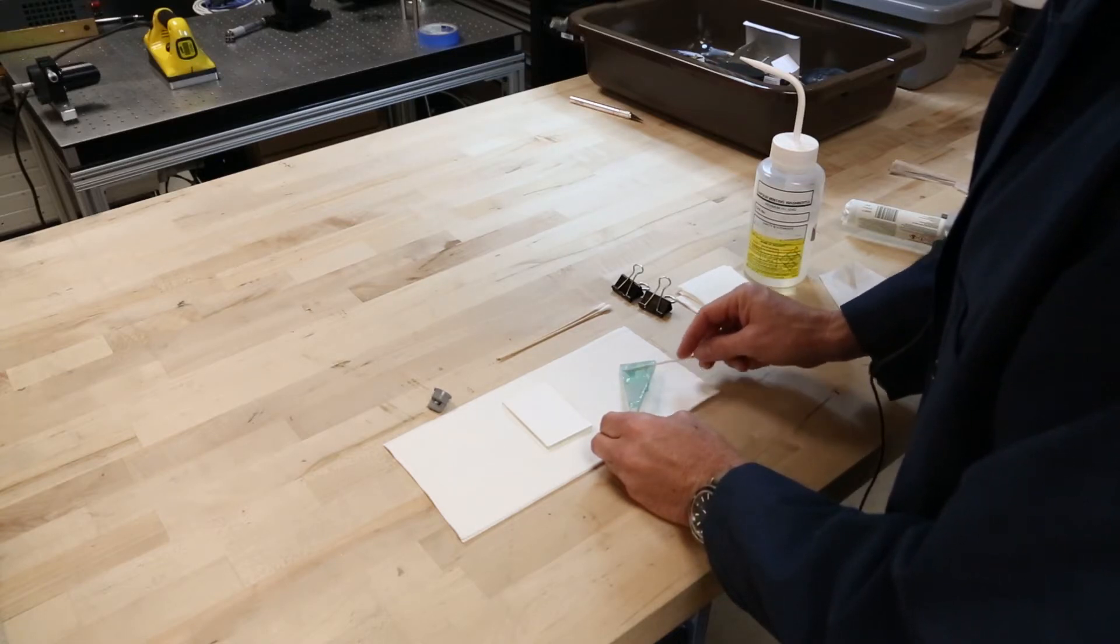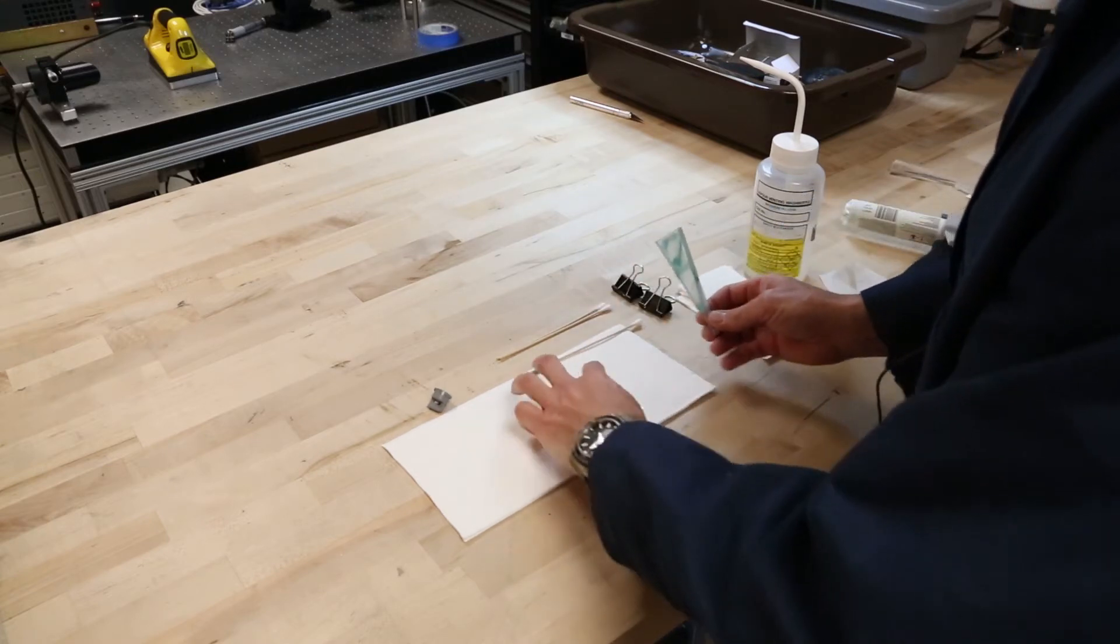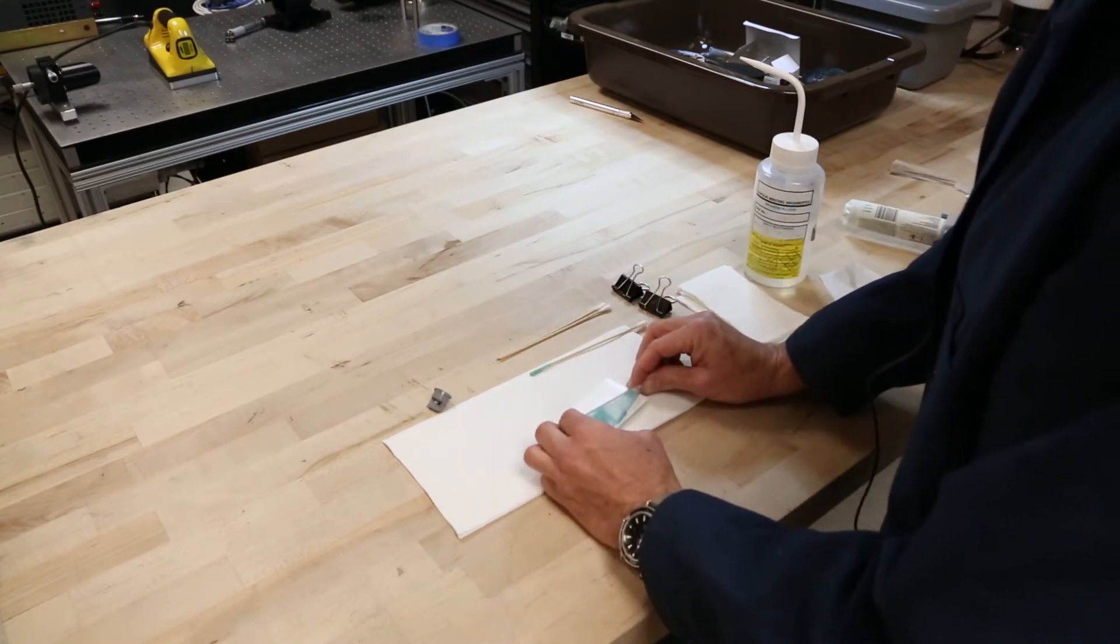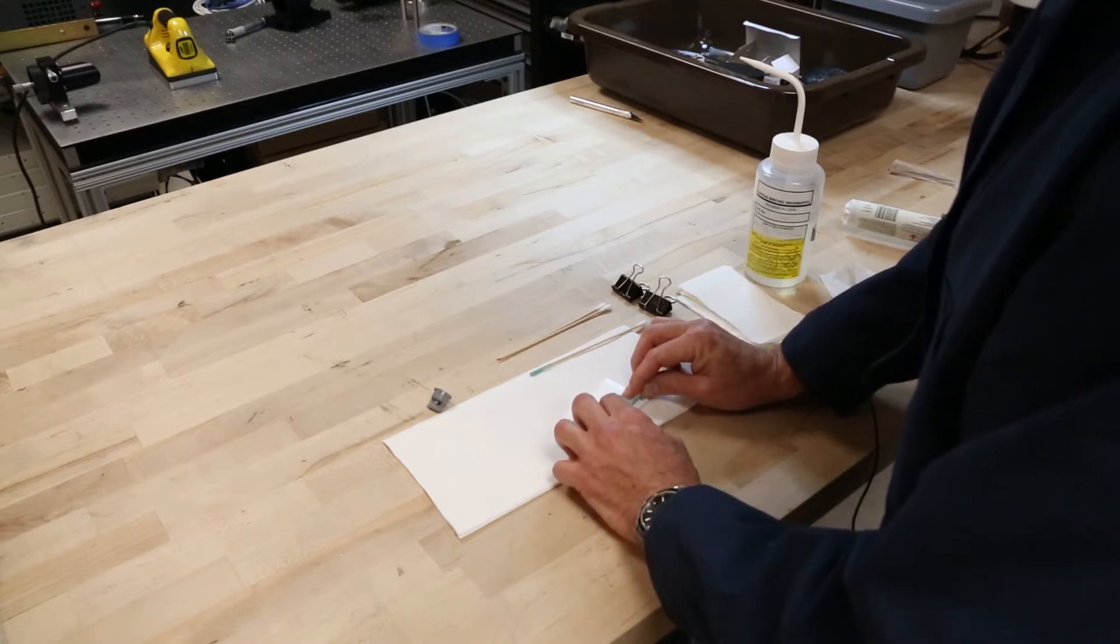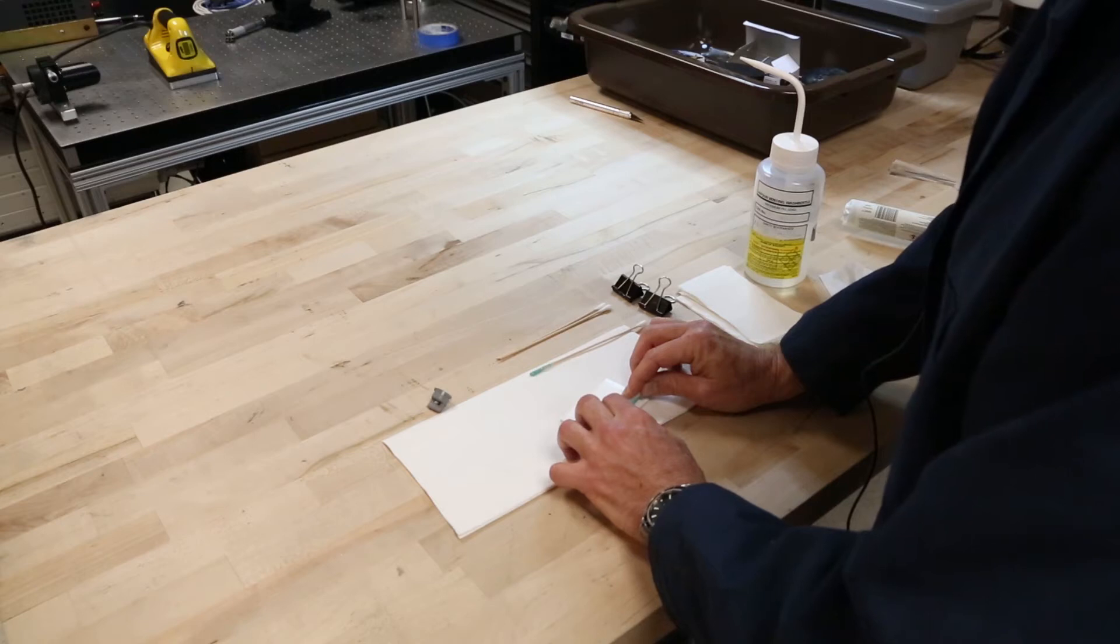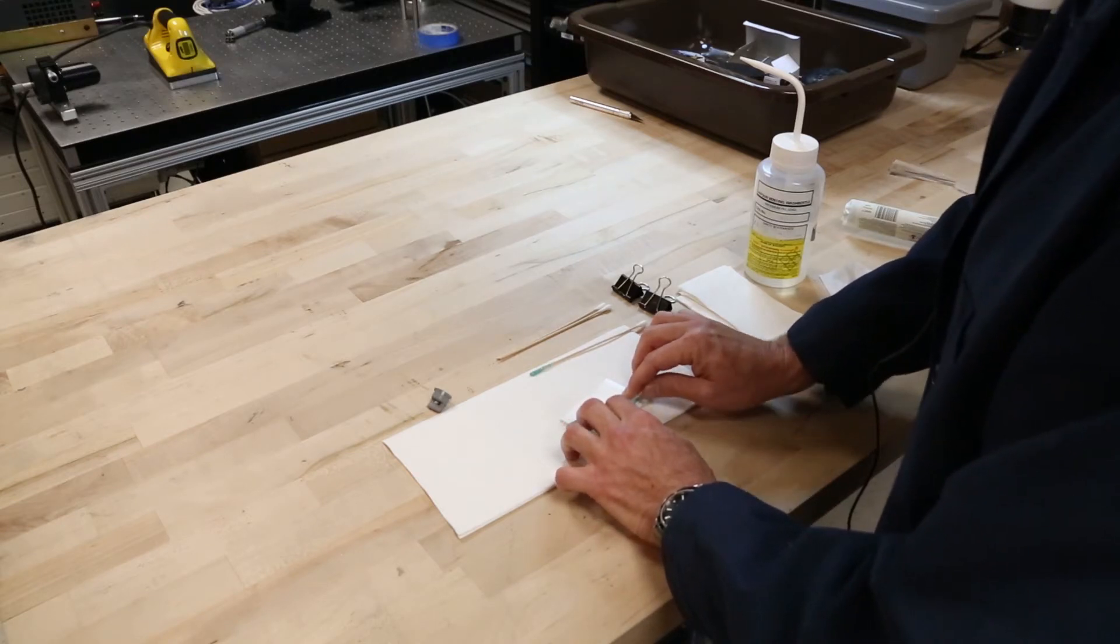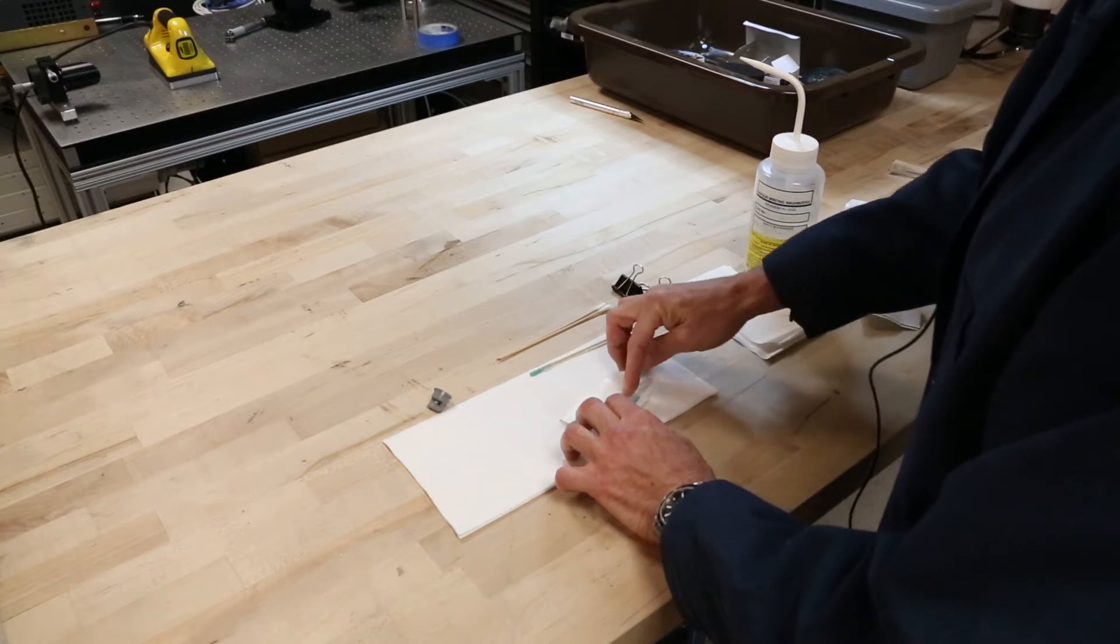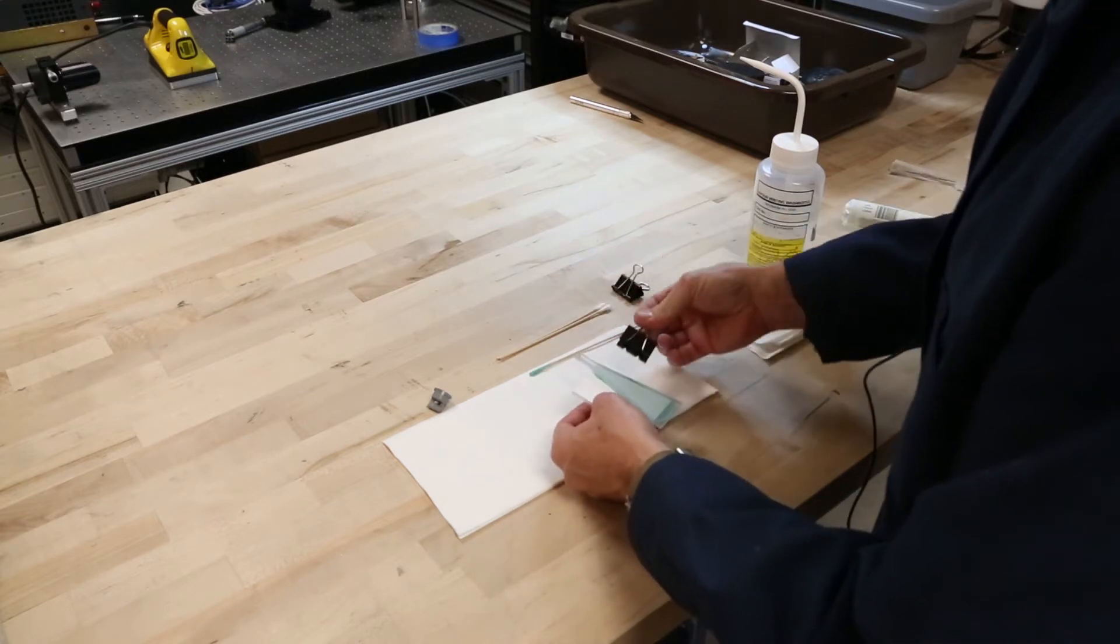Once you have it mixed and spread on your beam, simply place it off to the side of your coupon and press it down. This epoxy has small glass beads in it that set the bond line, so you don't need to worry about squeezing too much out. And after I have it pressed down for a second, I'll secure it with a couple binder clips.